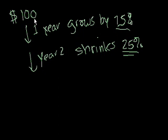If I start with $100 and I grow it by 25%, 25% of 100 is $25. So I grew it by $25. So I go to $125. So after one year of growing by 25%, I end up with $125.